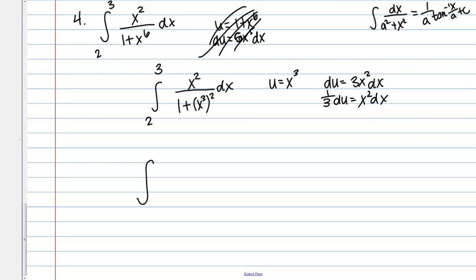Since we're going to make the substitution, let's go ahead and do the bounds as well. I have x equals 2, if I plug that into x cubed, that's going to give me u equals 8, and then I've got x equals 3, if I plug that in, that's going to give me u equals 27.